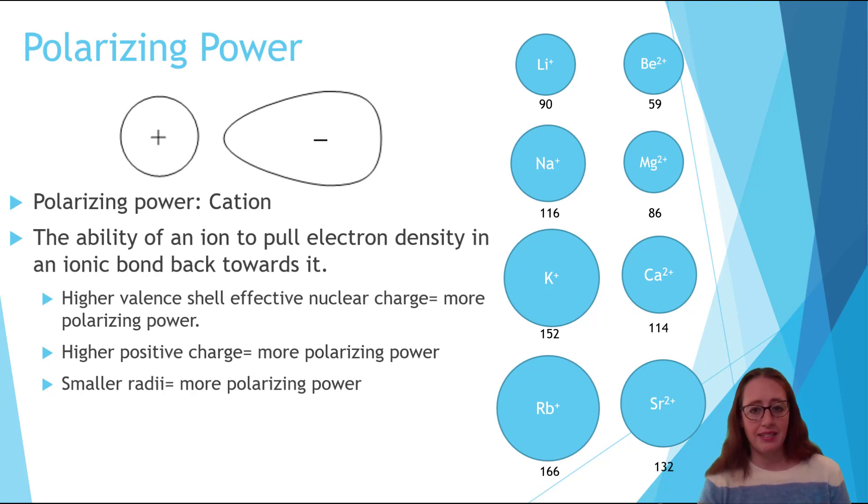I put some ion sizes in for reference, but all of our normal periodic trend rules apply. As you move down the periodic table, the size of the ion increases. Therefore, the polarizing power decreases. In general, the charge of the ion matters more to its polarizing power than the size of the ion, though as with most periodic trends, this can be overwhelmed with extreme enough examples.